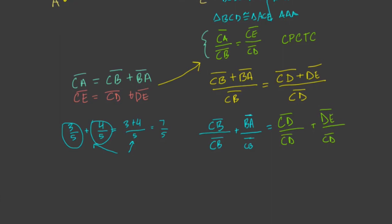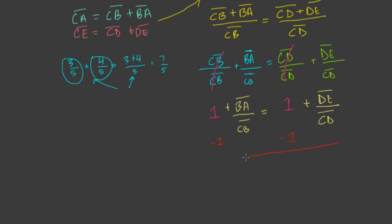And what's nice here is we get some things canceling out. CB over itself, whatever it is, is just 1. And CD over itself is also 1 as well. I can't reduce the other terms yet, but I think you'll see already that we're much closer to the side splitter theorem. And these things, these two expressions are equal. So 1 plus BA over CB equals 1 plus DE over CD. And we subtract 1 from both sides. Subtract 1, subtract 1.